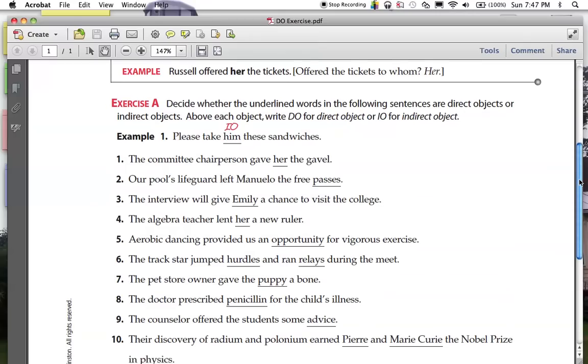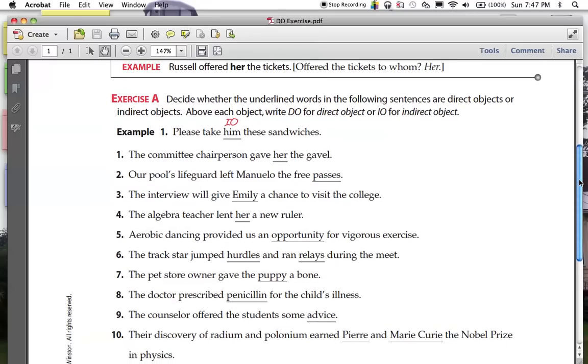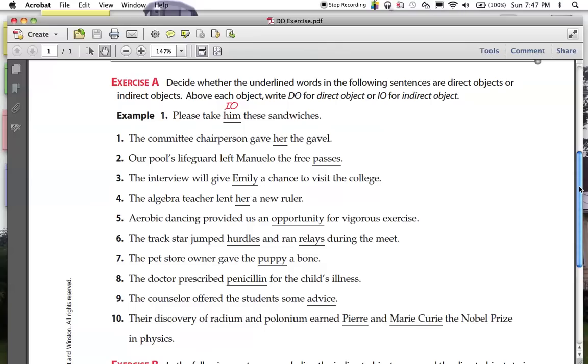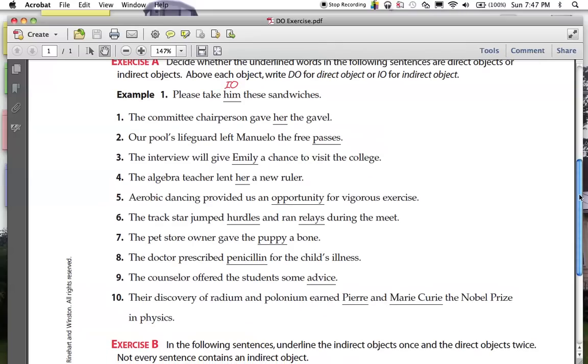Alright, so for number one, we're going to actually use instructions from the handout here. There's an underlined word in exercise A. Go ahead and tell me if it's the D-O or the I-O. In a couple, there are underlined words. Those will be compound, whatever they are, okay? So go ahead and do them on your sheet, freeze them, and I'll give you the answers.